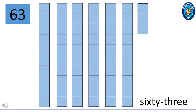This number is 63. 6 and 3 make 63. 63 is 6 ten-squared blocks and 3 squares. That means 60 plus 3 is 63. Can you see the number name at the right-hand side of your screen at the bottom?